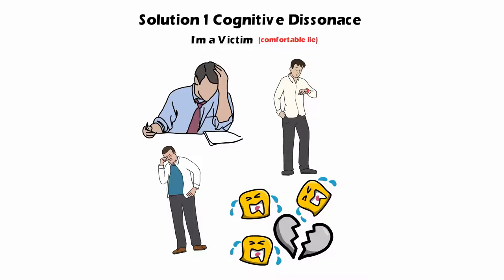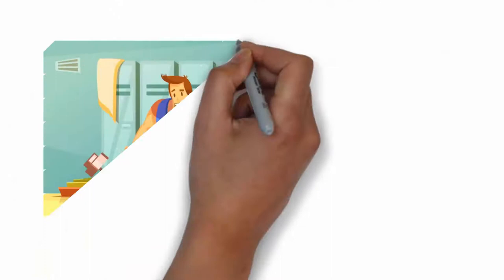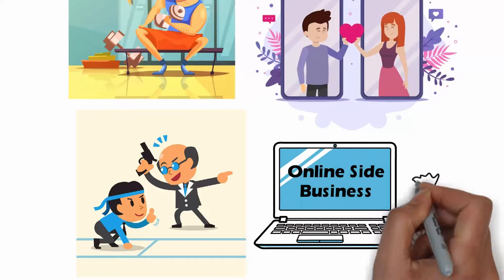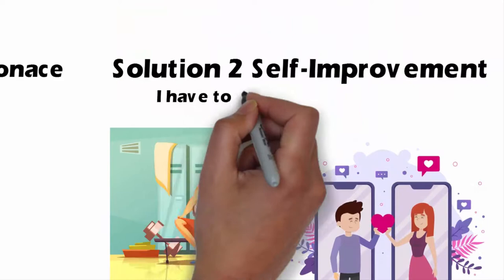The second solution is the solution of self-improvement. That's when Mark hits the gym again. When he's back in the dating scene and he's going out there meeting new women. When he's reading business books, self-development books. Maybe he starts an online side business to higher his income. Trying to become the best version of himself. So the solution is called I have to change or the hard truth.